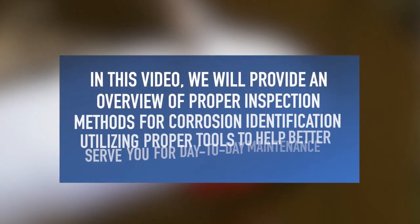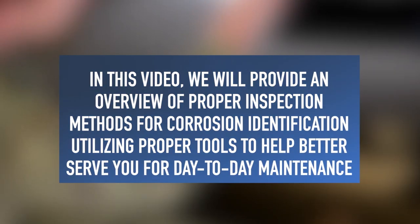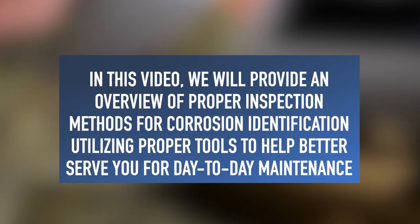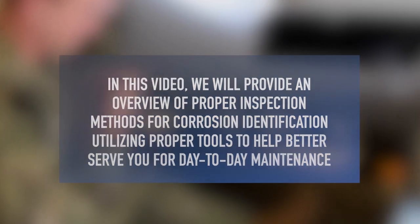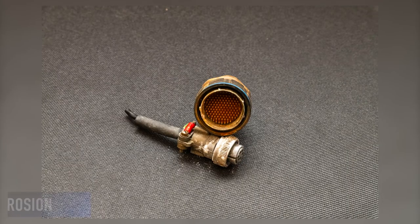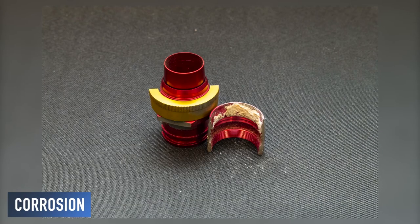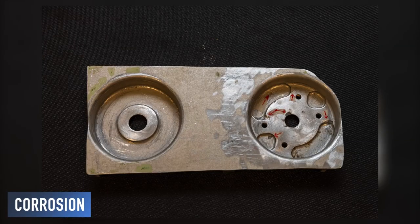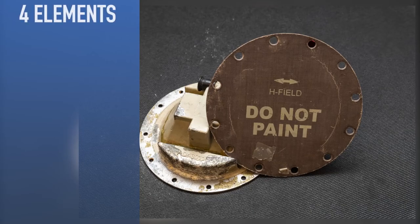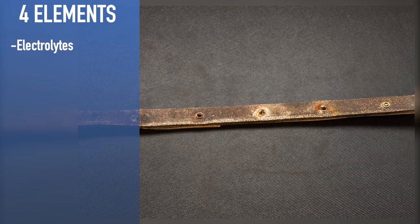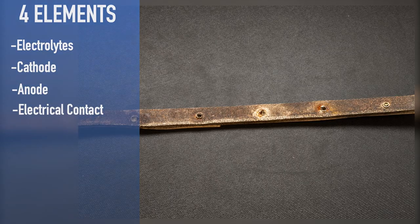In this video, we will provide an overview of proper inspection methods for corrosion identification utilizing proper tools to help better survey for day-to-day maintenance. Corrosion is the natural process that converts refined metal into a chemically stable oxide. Environmental forces are actively working to break down metal into its basic state. This will happen by the introduction of four elements: electrolytes, cathode, anode, and an electrical contact between the two.